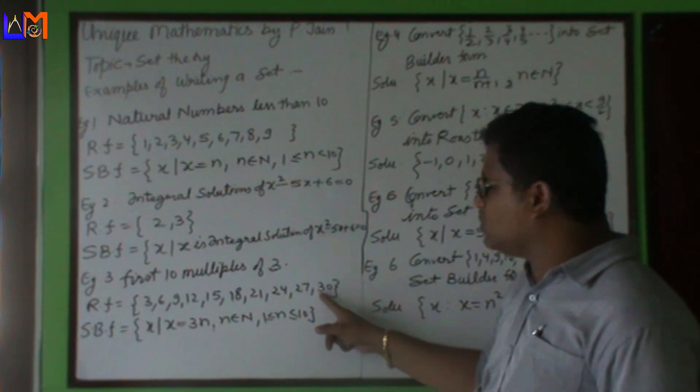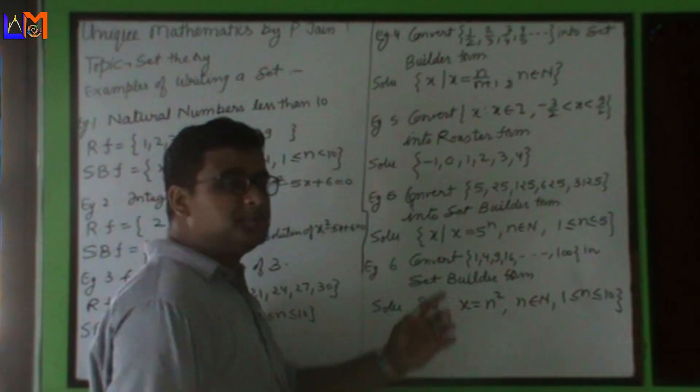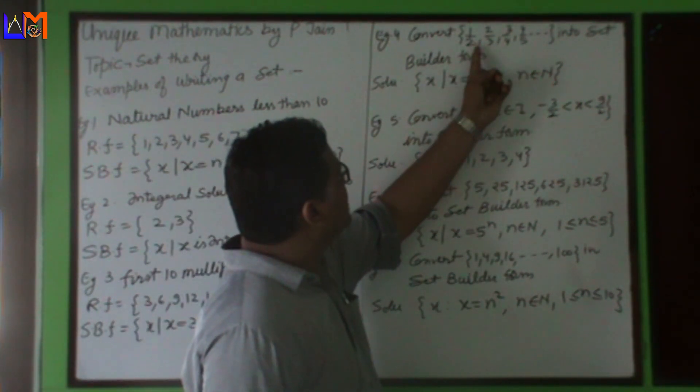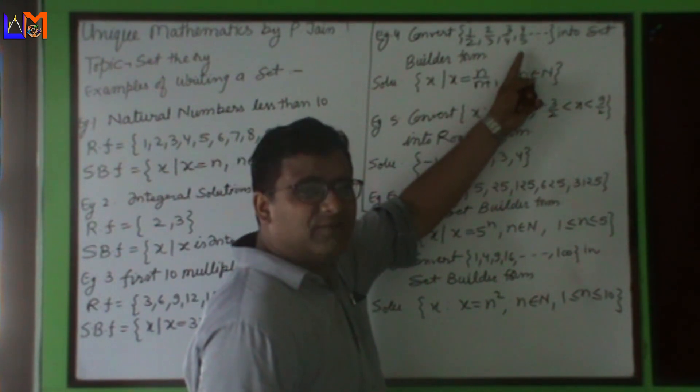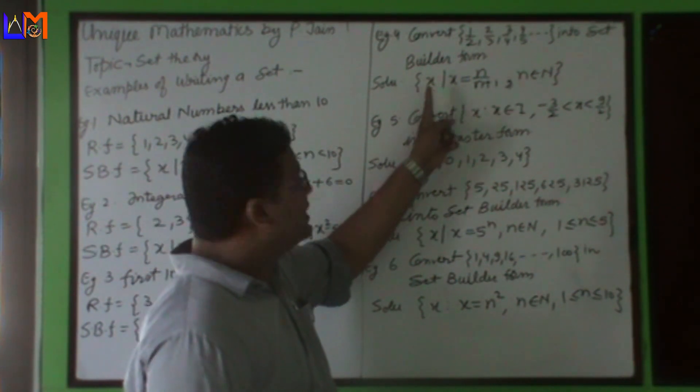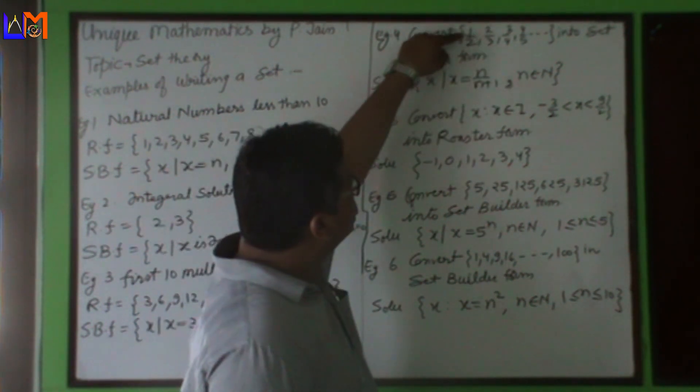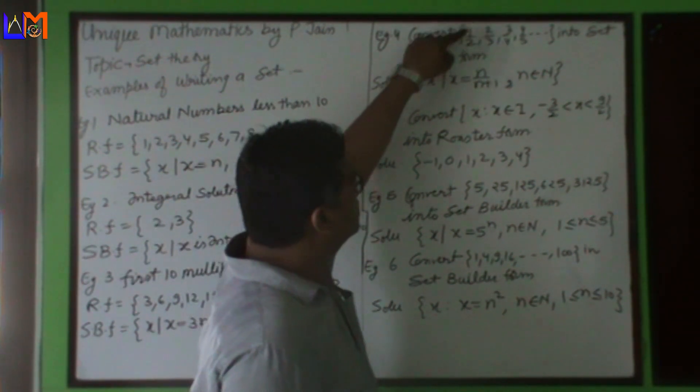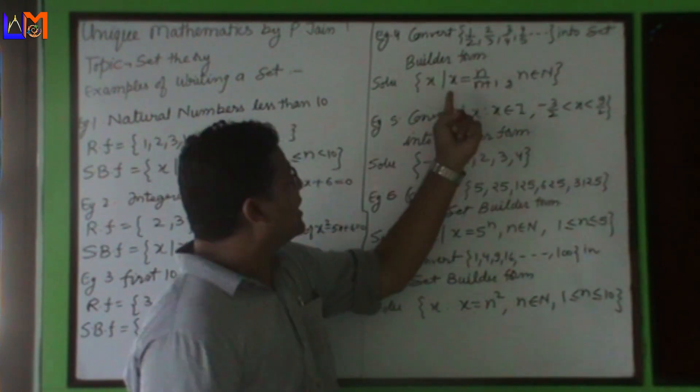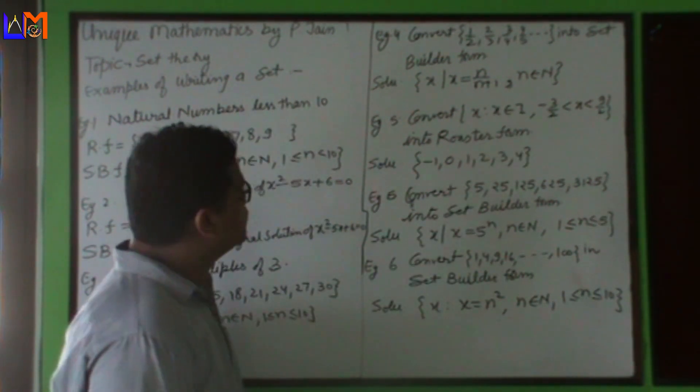Next example: convert this into set builder form. I have given you a roster form: curly braces 1/2, 2/3, 3/4, 4/5, and so on. Into set builder form we have to convert. Let's write: x such that x is n upon n plus 1. You can very easily see the number is increasing in denominator: 1, 2, 2, 3, 3, 4, 4, 5. Hence we can write: x such that x is n upon n plus 1, n belongs to capital N.